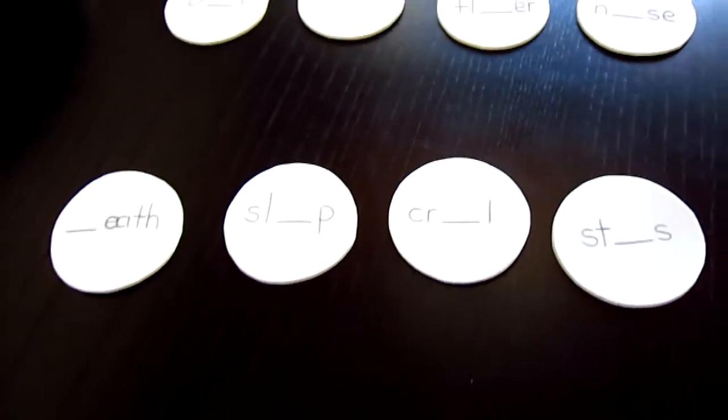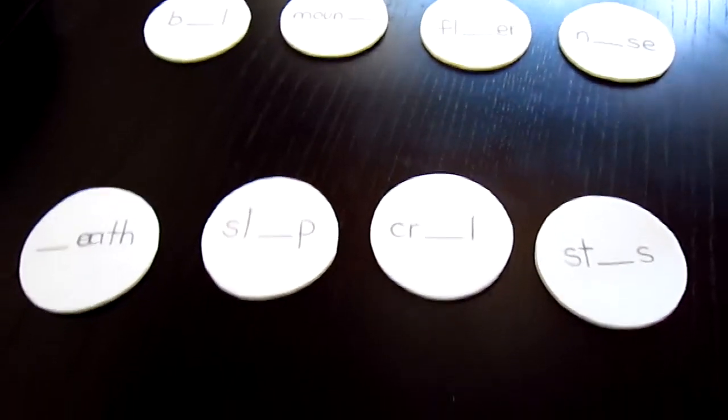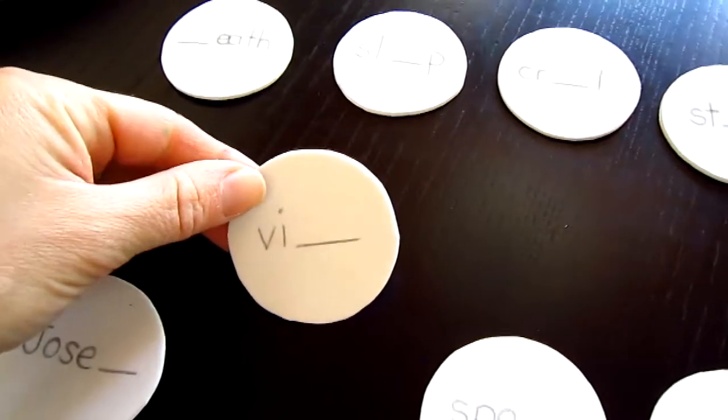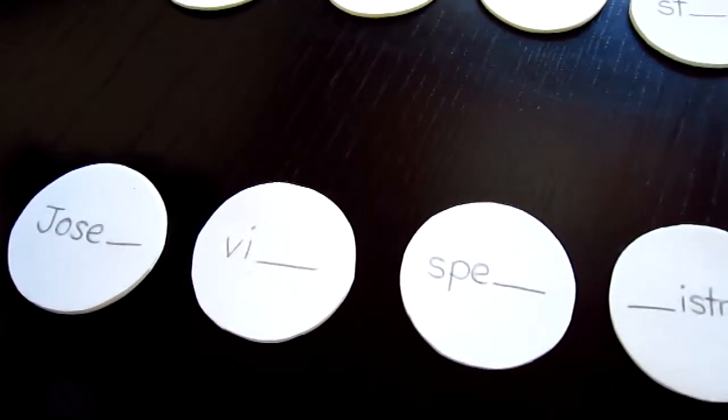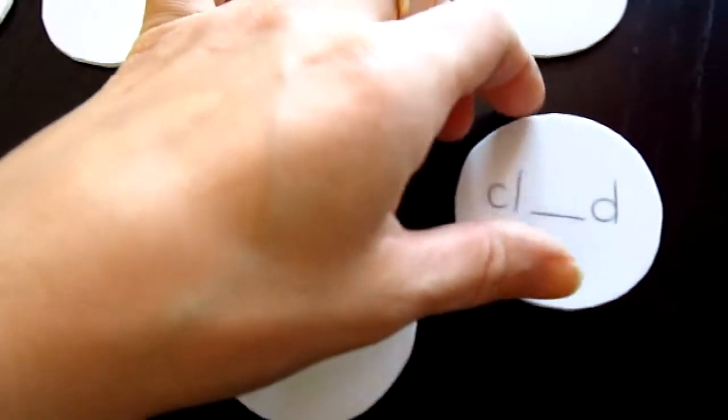And the big circles have words that have blanks for the sounds. And it's all related to Christmas or winter, so it's not too difficult.